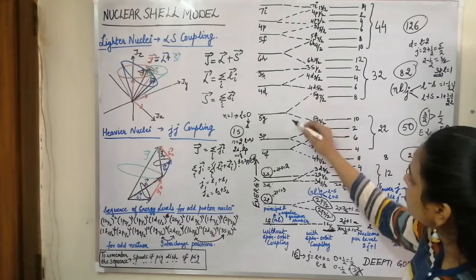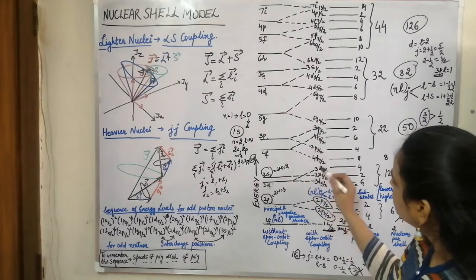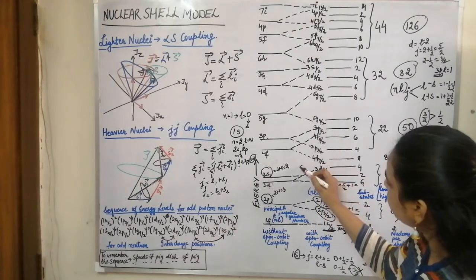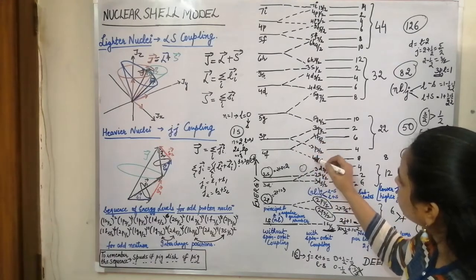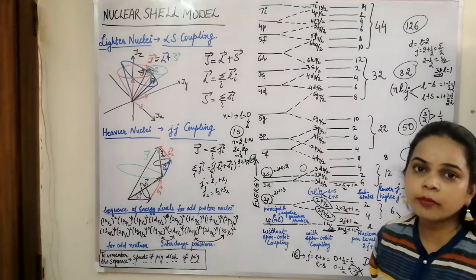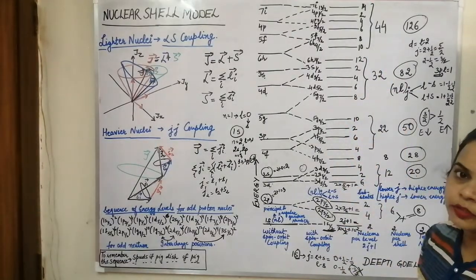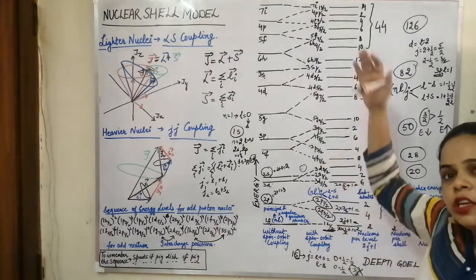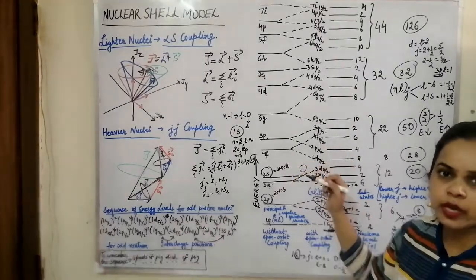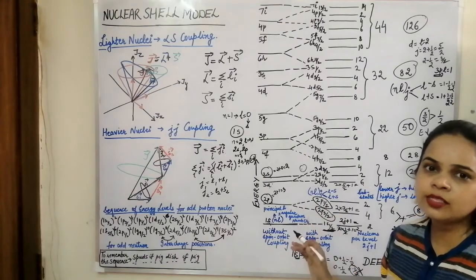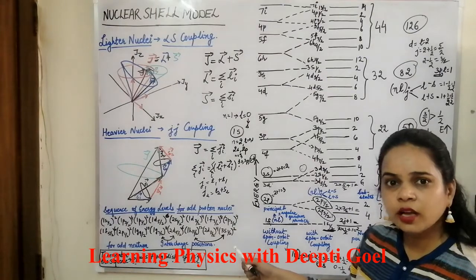Remember that the sub-level splittings generally just divide into two levels without overlapping, except at two specific points: 2S 1/2 comes between 3D 3/2 and 3D 5/2, and 3P 3/2 comes between the 4F levels. These are the only two places where the sequence changes. Everywhere else the pattern holds: higher J value is placed at lower energy, and lower J value is placed at higher energy.